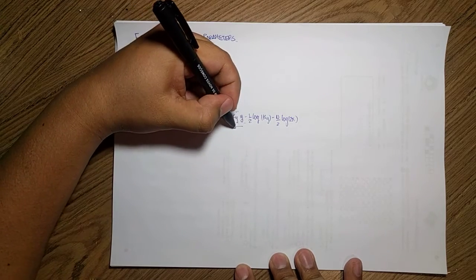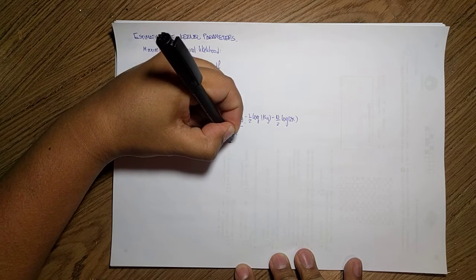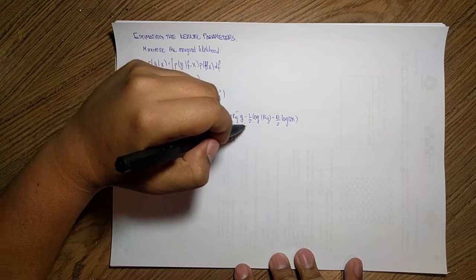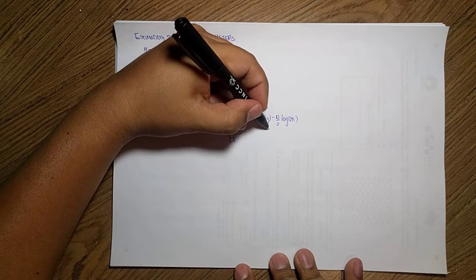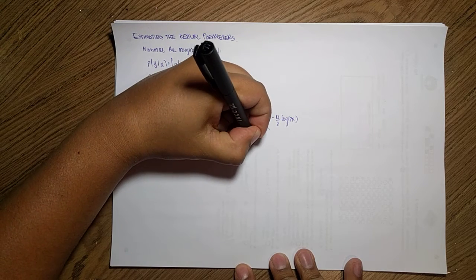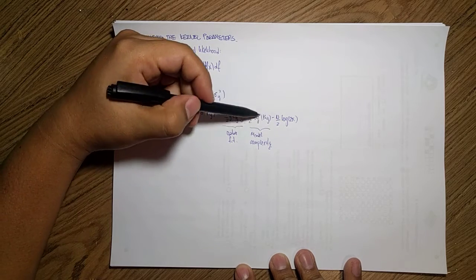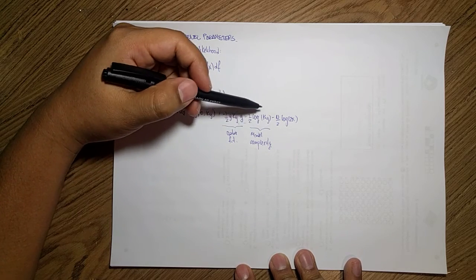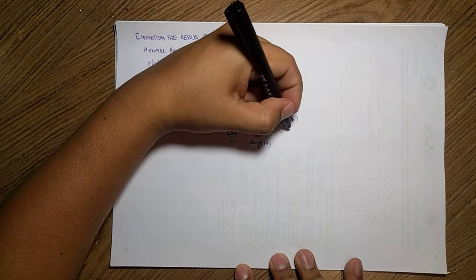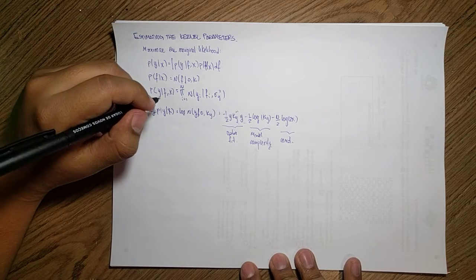So this part over here is just my data fit, a term that's just fitting the data using my kernel and the predictions. And this is how complex my model is, the model complexity. This determinant is telling me how complex it will end up with respect to the kernel that I'm using. And this is just a constant value, so we can just throw it away.